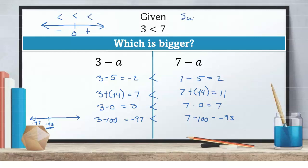This is our subtraction property of inequality — just like the addition property, subtracting the same number from both sides never requires flipping the sign. We don't flip the sign ever with subtraction.